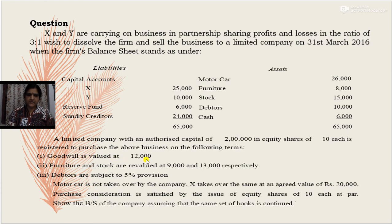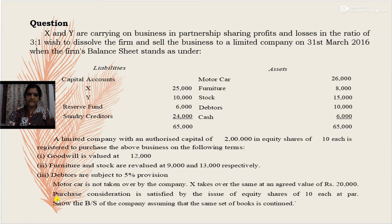Debtors are subject to a 5% provision. Motor car is not taken over by the company — X takes over the same at an agreed value of Rs. 20,000. The purchase consideration is satisfied by the issue of equity shares of Rs. 10 each at par. We are required to show the balance sheet of the company, assuming that the same set of books is continued.